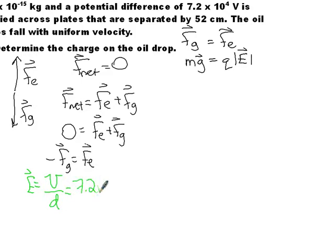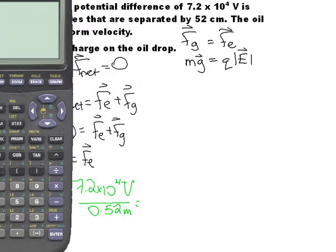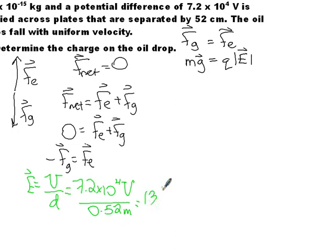So we know that number, 7.2 times 10 to the 4 volts is our potential difference. And our separation, 52 centimeters, 0.52 meters. So our separation is, we get the calculator out here, or rather our electric field is 138,461. Let's write that down, 138,461 newtons per coulomb. All right, now we can do some substitution.